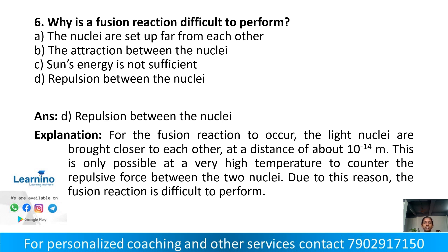Why is a fusion reaction difficult to perform? Option A: nuclei are set far from each other. Option B: attraction between nuclei. Option C: the sun's energy is not sufficient. Option D: repulsion between nuclei. The correct answer is Option D — repulsion between nuclei makes fusion difficult to achieve.